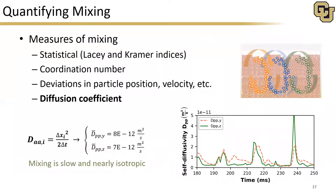We're also interested in quantifying mixing. We chose to use diffusion coefficient as our measure of mixing — essentially tracking the deviation of particle position around a trajectory defined by the bulk convection velocity. What we find, perhaps unsurprisingly based on the videos, is that mixing is fairly slow and it's nearly isotropic. These self-diffusion coefficients are fairly low, and we see that they're nearly equal in both the Y and Z directions.